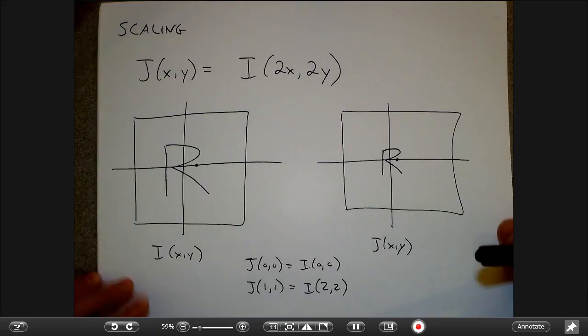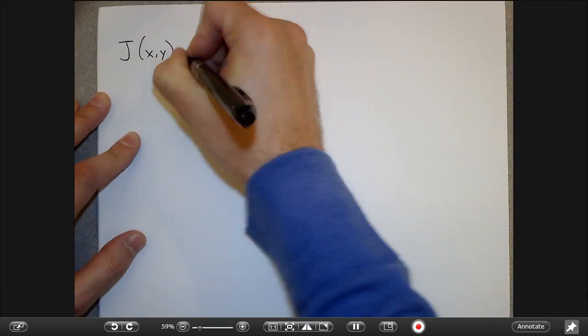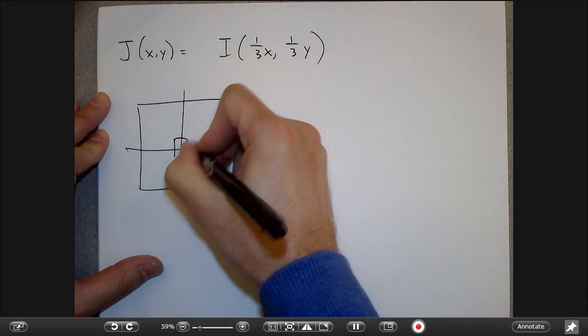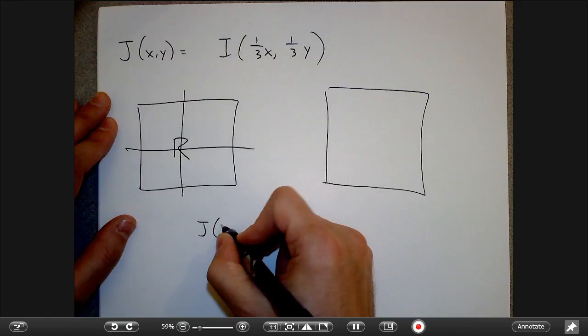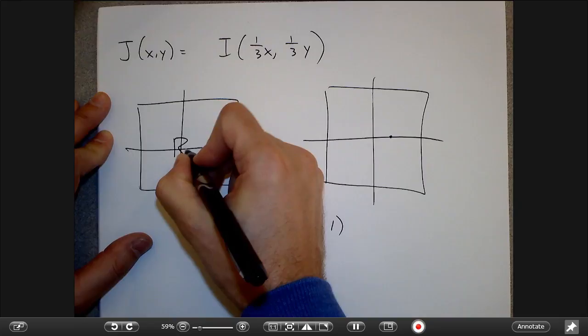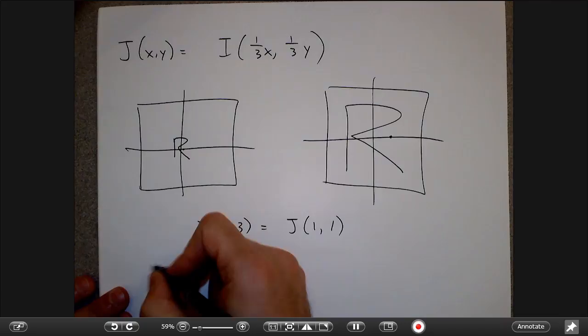Conversely, with J of XY = I of one-third X, one-third Y: the new image at 3,3 equals the old image at 1,1. Things are magnified — this pixel takes its value from a pixel much closer to the center, giving an image three times as big.